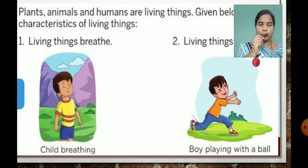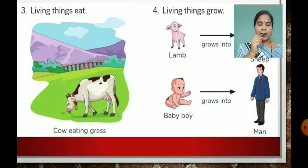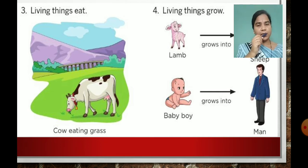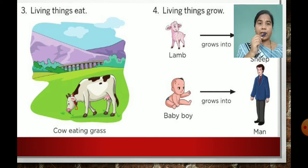Living things can breathe. These are the characteristics — how to identify living things. Number 3: living things eat. Like in this picture, we can see a cow eating grass. The living things can eat.